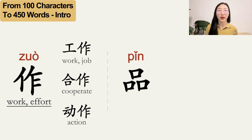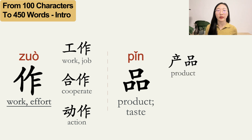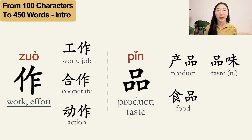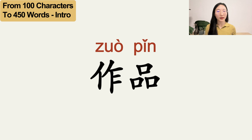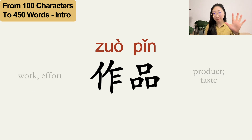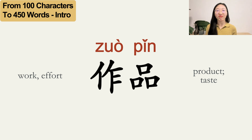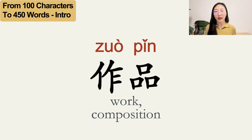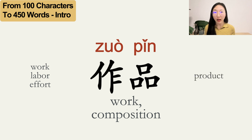Another character, 品, has two main meanings: one is 'product' and the other is 'taste.' Example words are shown here. So let's say you have learned these two characters and become familiar with these words — now you see a new word combining them. What do you think it means? It means a work, like a painting or article — something you put your effort and work into and finally got a result, a product. Now you get a feel for how characters work together in a word.